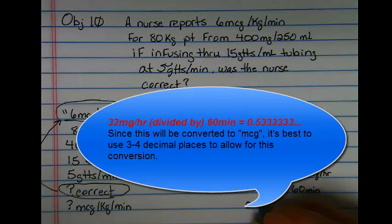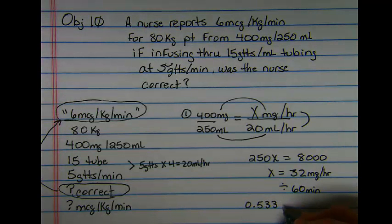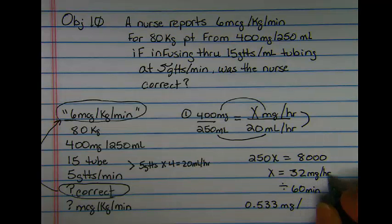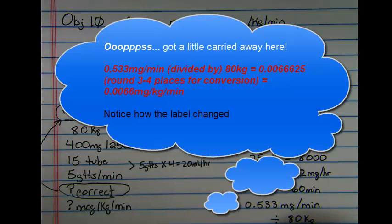So this is 0.5 repeating three. So I'm going to just carry this three decimal places because I know this will be converted. So at 0.533 milligrams, nothing's changed there, but now instead of hours it's minutes. But I need to know per kilogram. So I'm going to divide this by the 80 kilogram rate and this equals 0.0066. It's still milligrams, but now it's per kilogram and per minute.